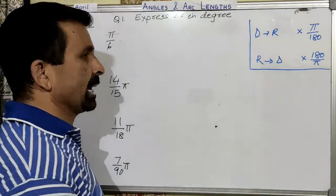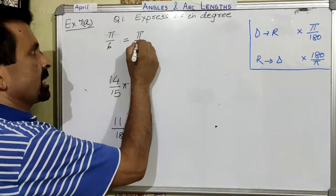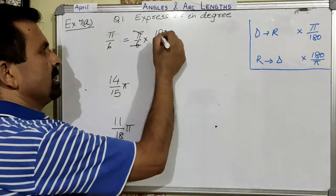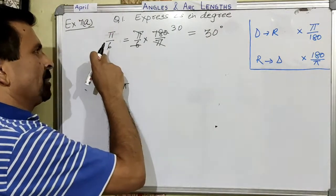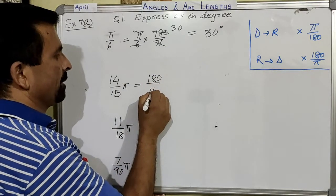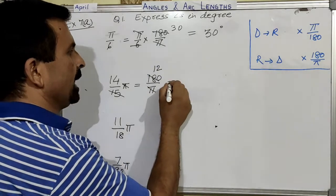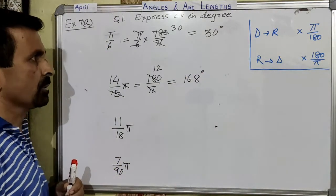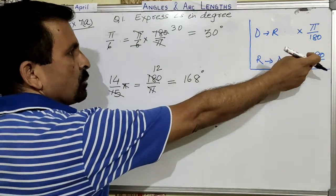By doing so, we can convert all the angles into degree. For the first question, π/6 is multiplied by 180/π. Pi and pi cancel; 180 divided by 6 gives 30 degrees. That means the angle π/6 in radian is exactly equal to 30 degrees. Similarly, the next angle multiplied by 180/π gives 14 × 12 = 168 degrees. Just multiply the given angle by 180/π to convert radian into degree.